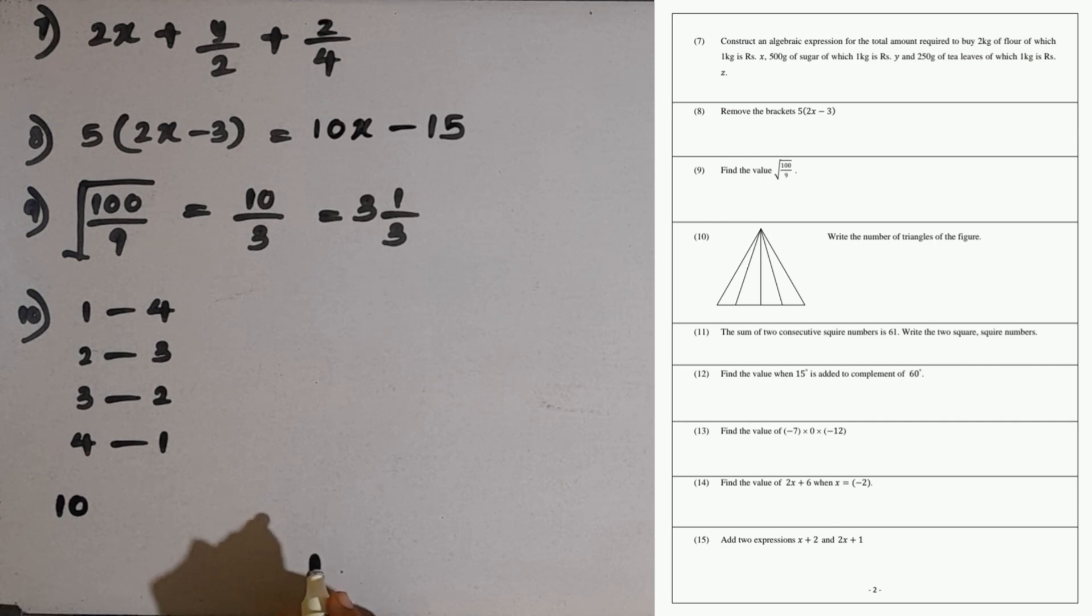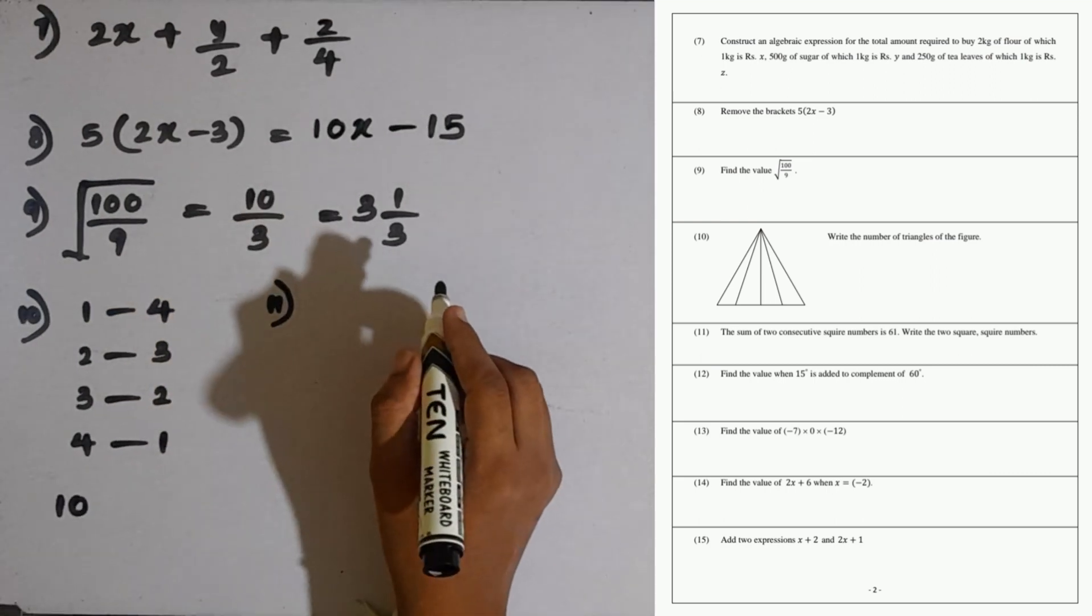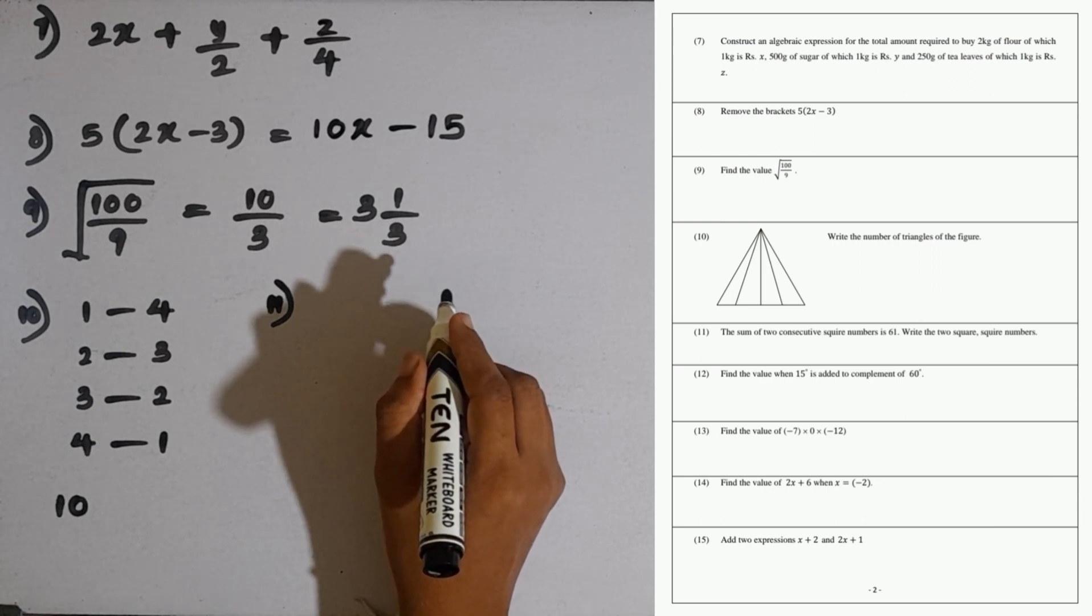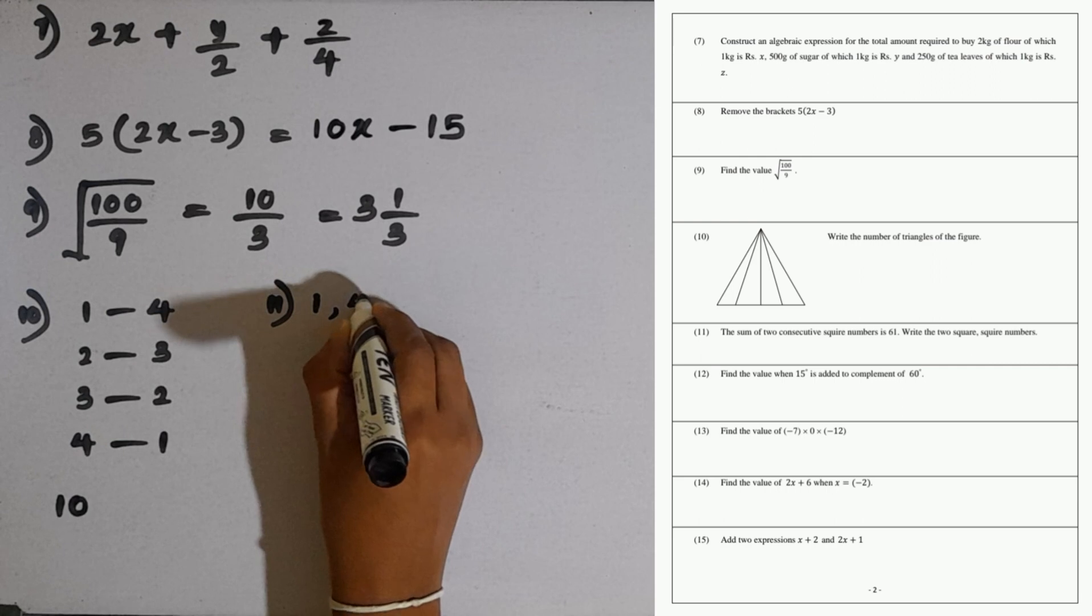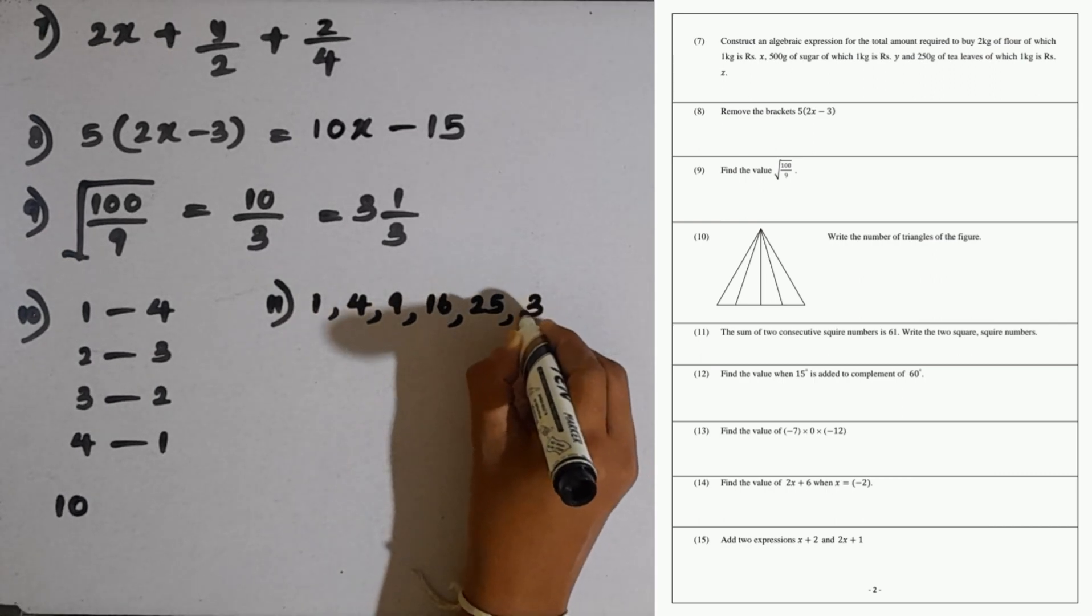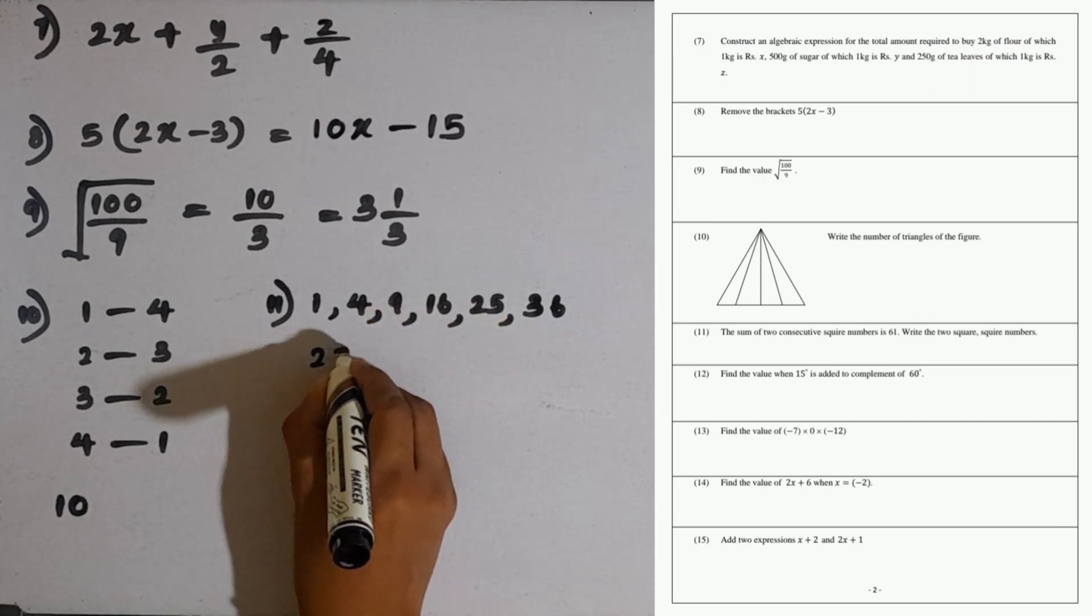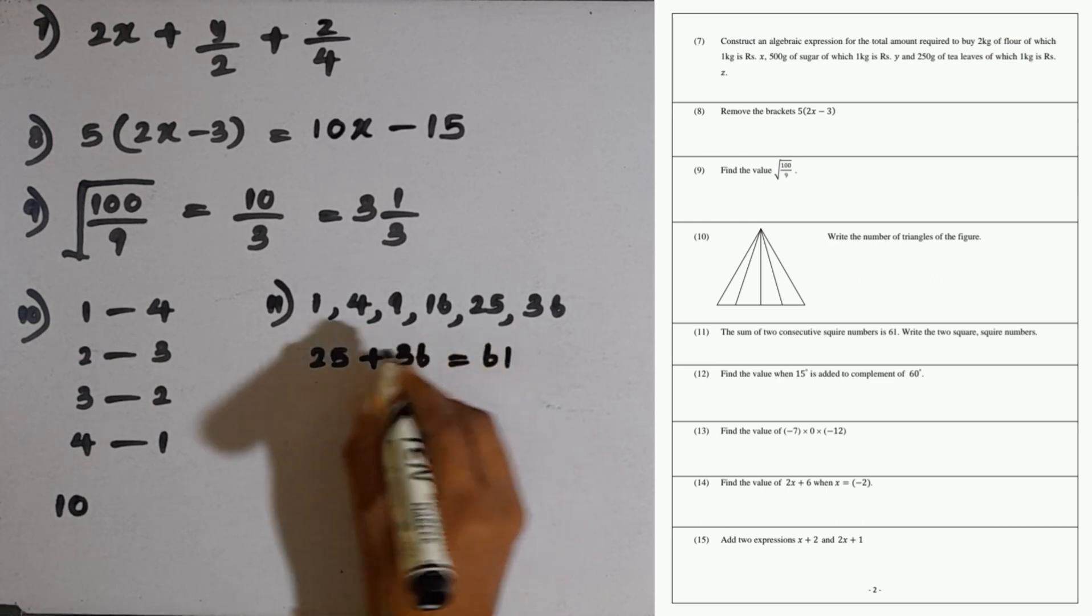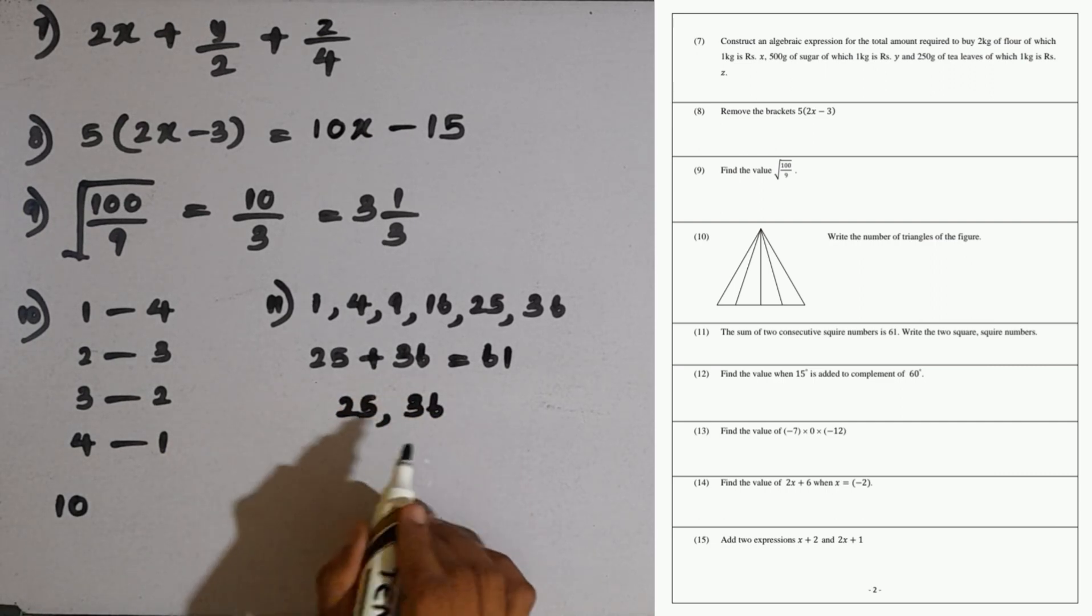Then question number 11. The sum of 2 consecutive square numbers is 61. Write the 2 square numbers. First we will write some square numbers from 1: 1, 4, 9, 16, 25, then 36. If you add these 2 square numbers, what is the addition? 25 plus 36, the addition is 61. Then our answer is 25 and 36.